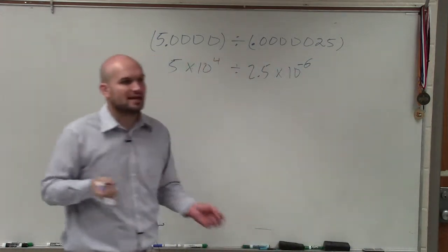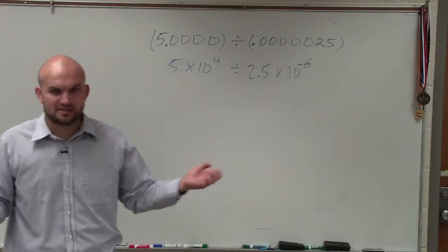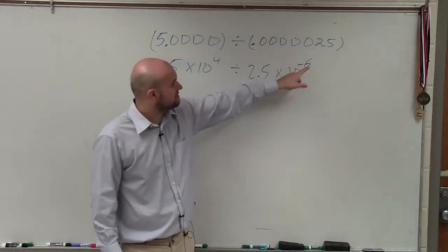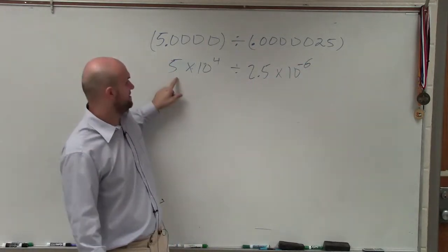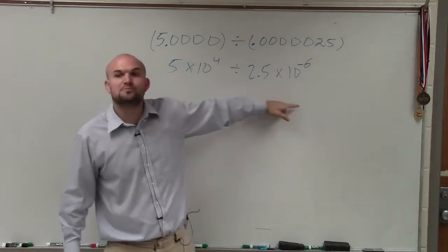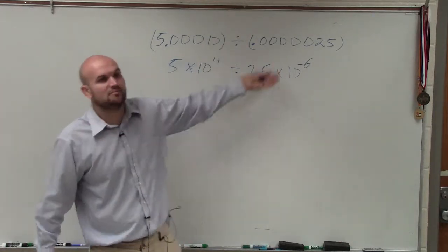Does everybody understand how I rewrote those in scientific notation? The negative 6 tells you to move this over 5 units. The positive 4 tells me to move the decimal point over 4 units, which would give you back these numbers.